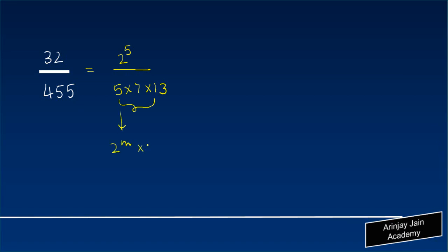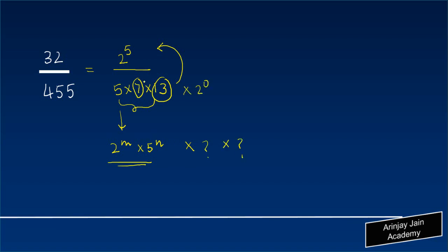When I look at 5 times 7 times 13 in the denominator, is it being expressed in the form 2 to the power m into 5 to the power n? The answer is no, because the 7 and 13 are not cancelling out with the numerator. I can write it as 2 to the power 0 and 5 to the power 1, but it is not only 2 to the power m into 5 to the power n — there are two other components.